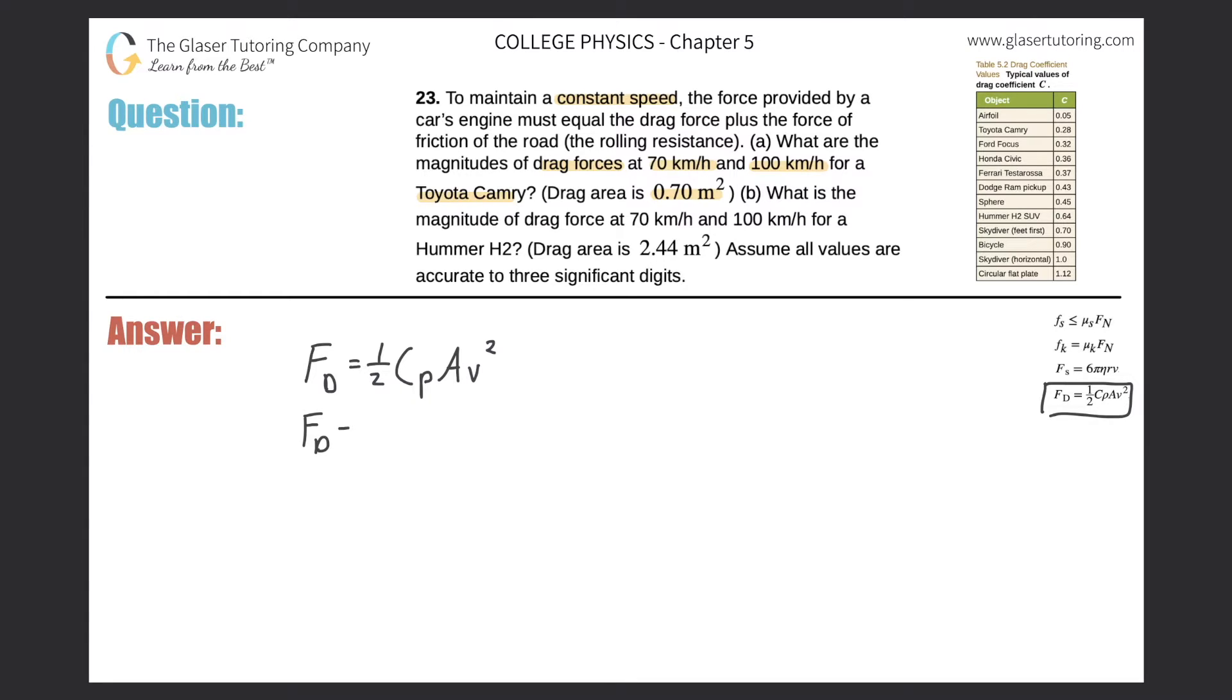Let's see what we know. The coefficient of drag—let's go to the table in the upper right-hand side. Coefficient of drag, we're talking about a Toyota Camry. Here it is: 0.28. It's traveling in air, so we need to know that the density of air is equal to 1.21 kilograms per cubic meter. The area—it told us the drag area is 0.70 meters squared.